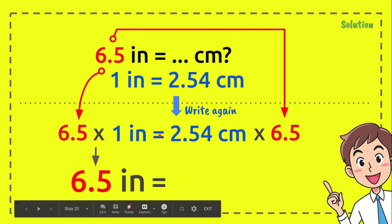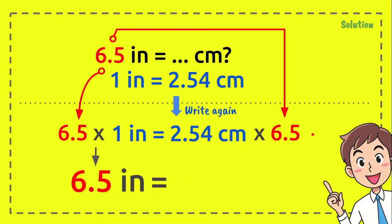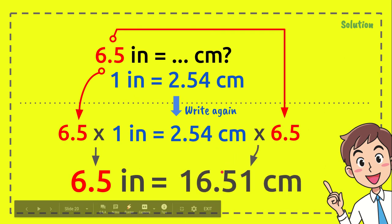After that, 2.54 centimeters times 6.5 equals 16.51 centimeters. That's the answer! Thank you so much for watching.